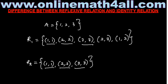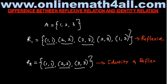I say the first relation R1 is reflexive. R2 is identity, and it is also reflexive. But for R1, we cannot say that it is identity — it is only reflexive. R2 is both identity and reflexive. So before we talk about why, let us first find the difference between reflexive and identity.